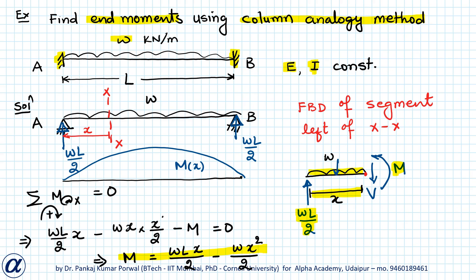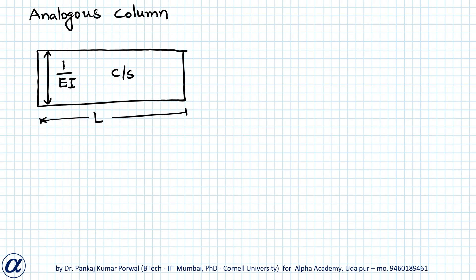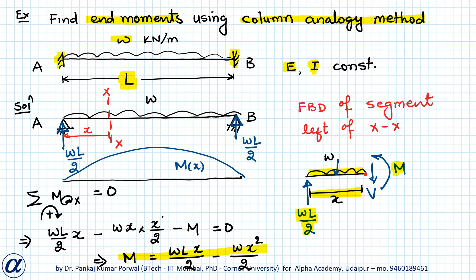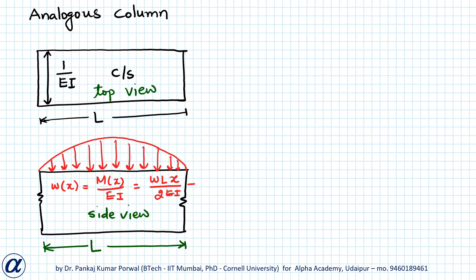The analogous column is a short column with width L and breadth 1/EI. This is the cross-section or top view. On this column we apply a distributed load with magnitude Mx/EI, which is a parabolic loading. The load intensity wx = Mx/EI = wLx/(2EI) − wx²/(2EI), running from point A to point B.